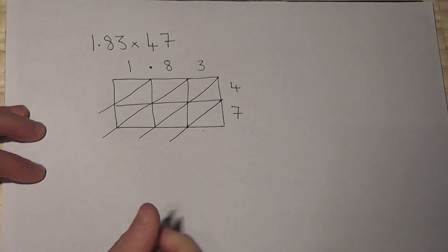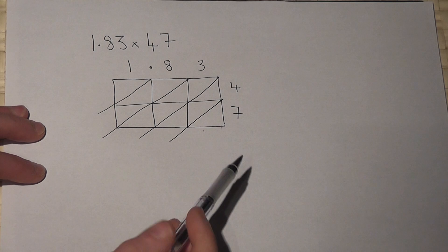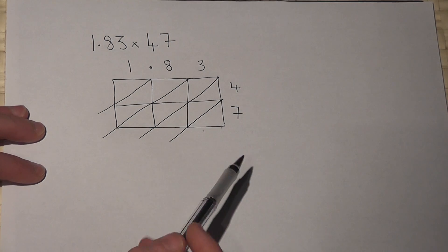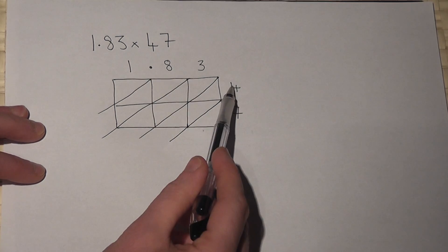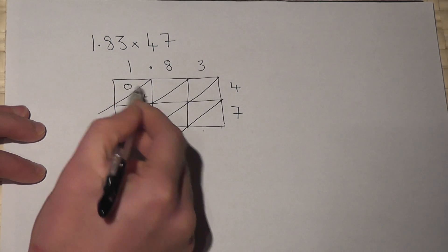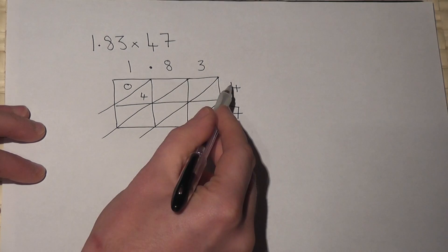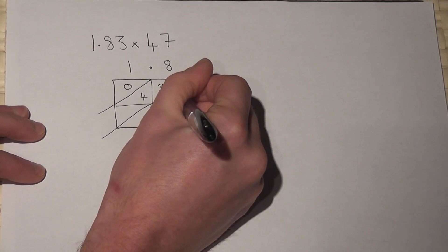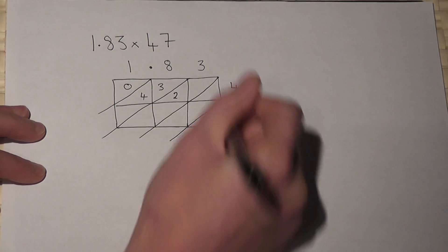I now work out 6 very simple multiplications. 1 times 4 is 4, so I'll put 0, 4. No tens, 4 units. 8 times 4 is 32. 3 times 4 is 12.